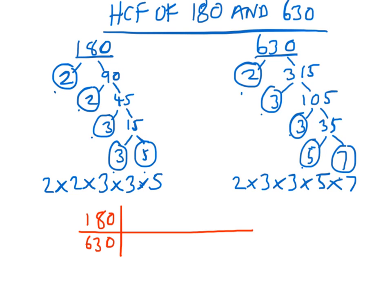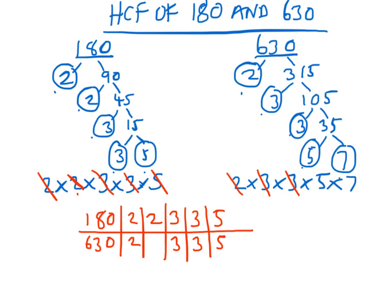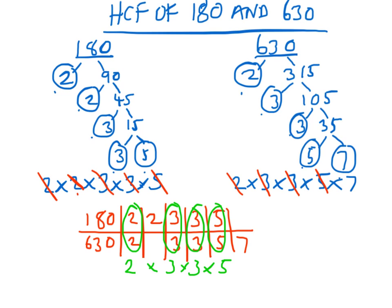Now to construct our little table. They both have 2 as a common factor, so I put those in. But 180 has got another 2, whereas 630 doesn't, so that goes in separately. Then they've both got a 3, and both got another 3, and they've both got a 5. And 630 has also got a 7. I circle the ones they've got in common: one of the 2's, both 3's, and the 5. Then multiply: 2 times 3 times 3 times 5. That's 3 times 3 equals 9, and 2 times 5 equals 10, so 9 times 10 equals 90. So 90 is the highest common factor of 180 and 630.